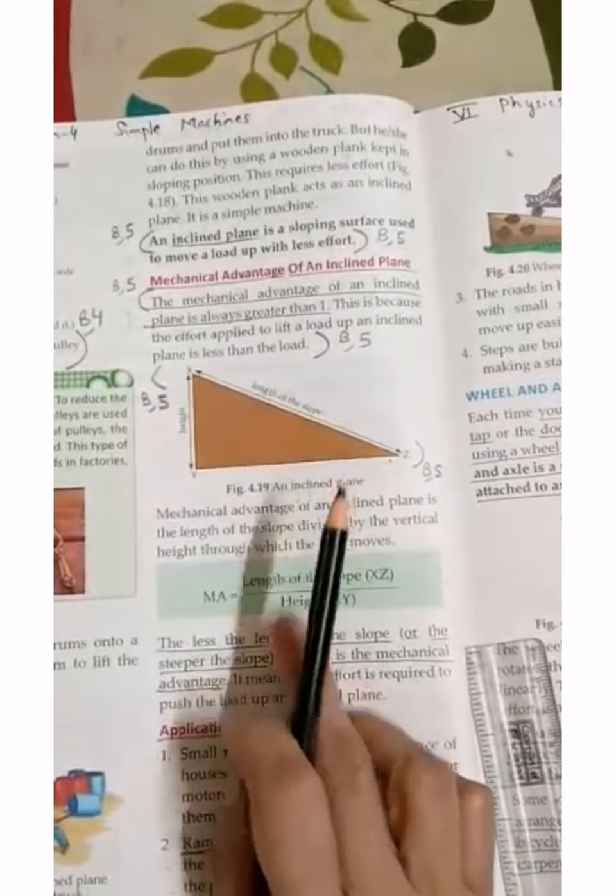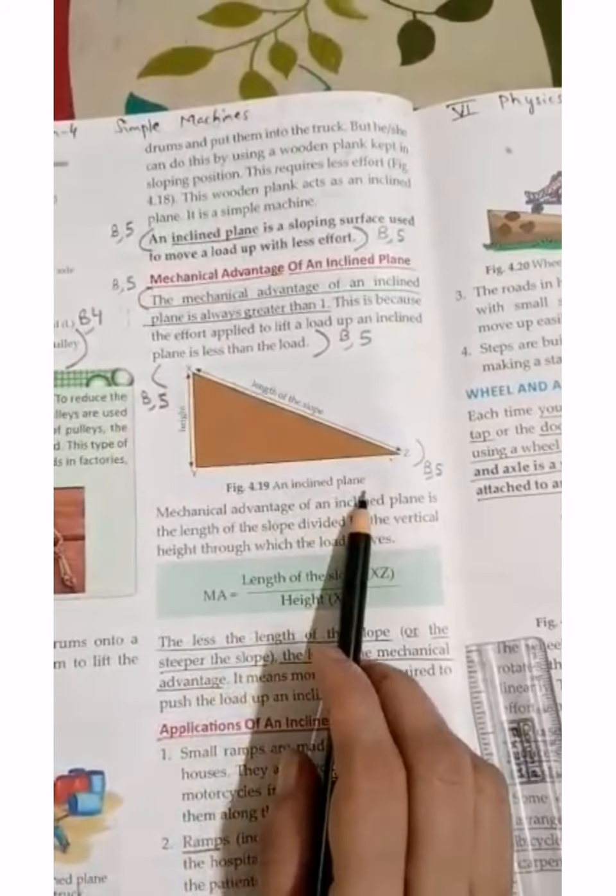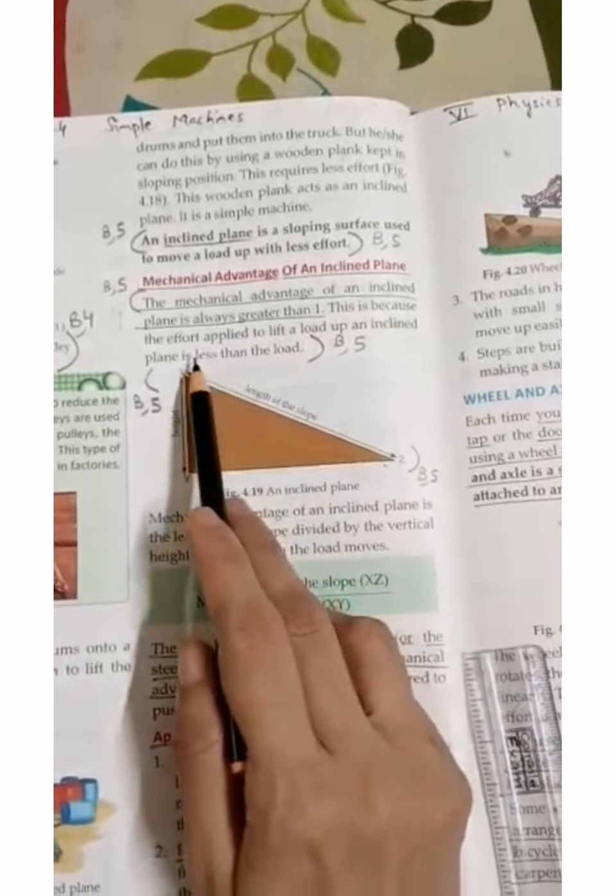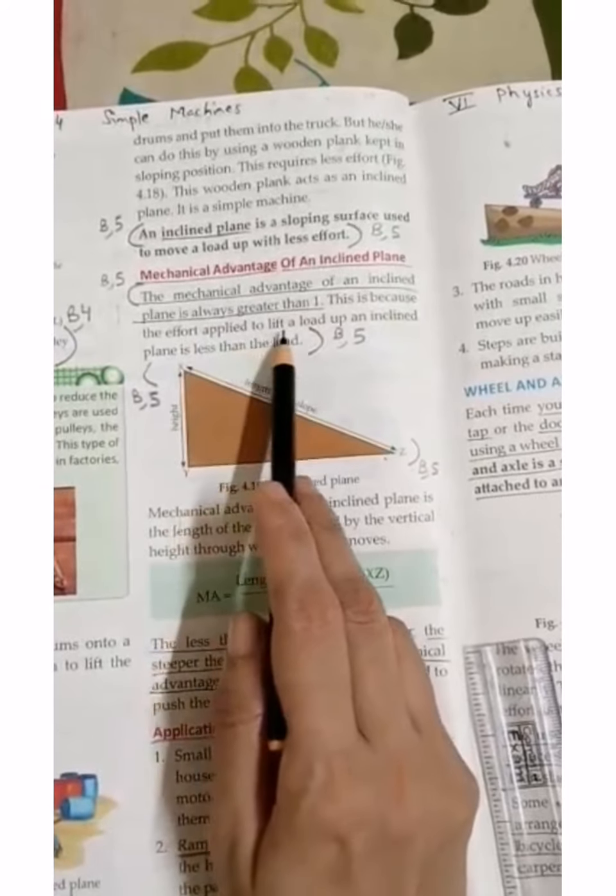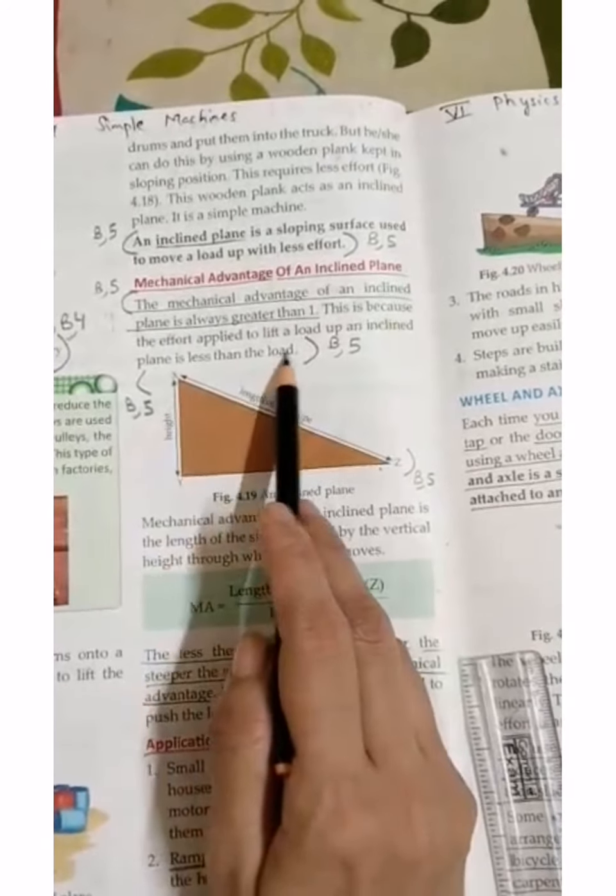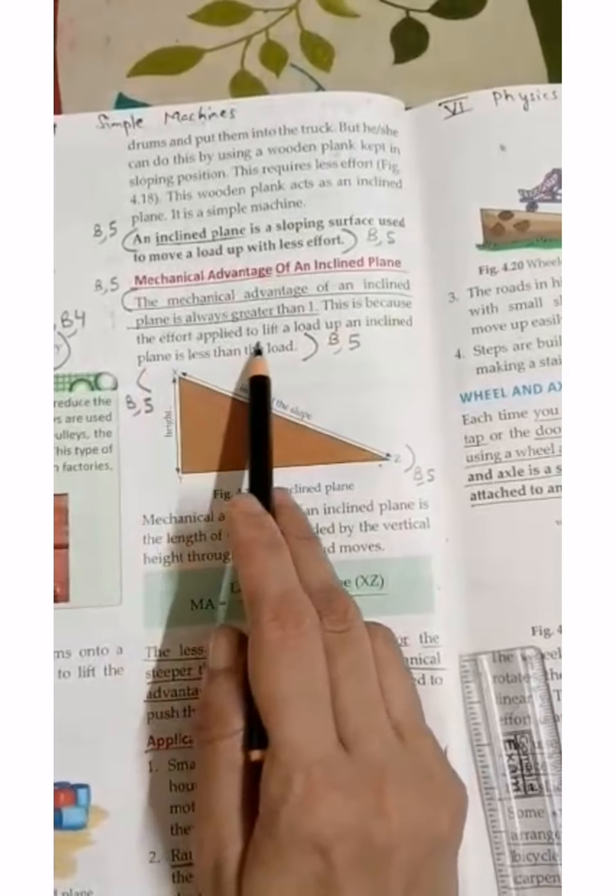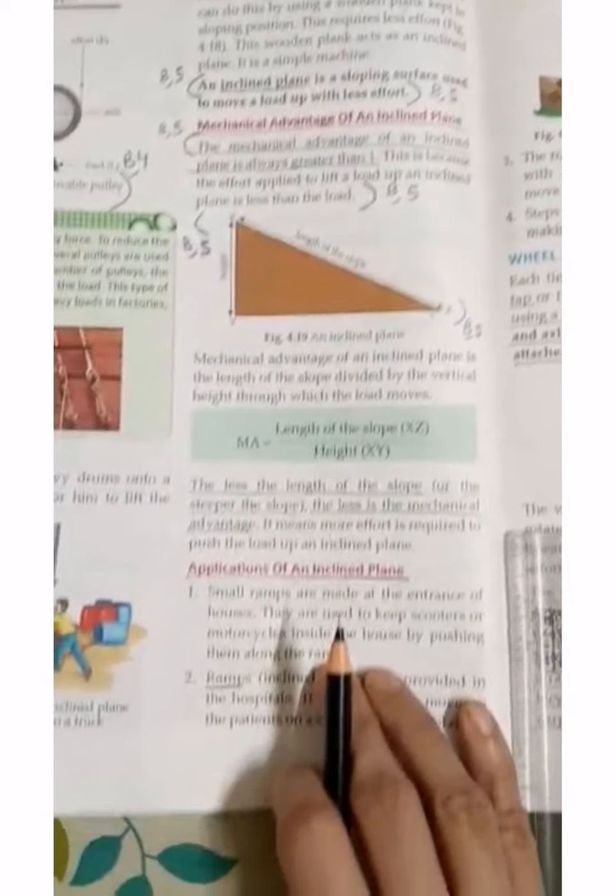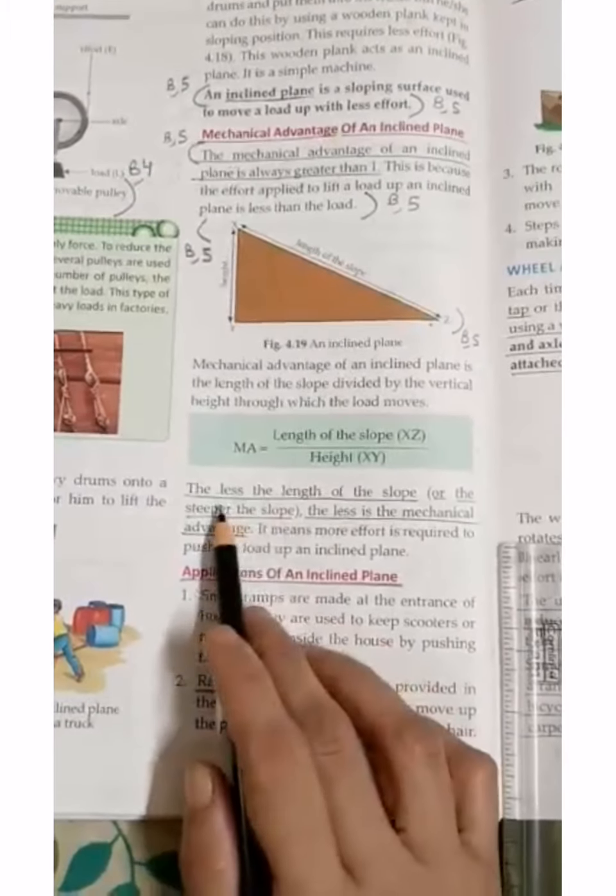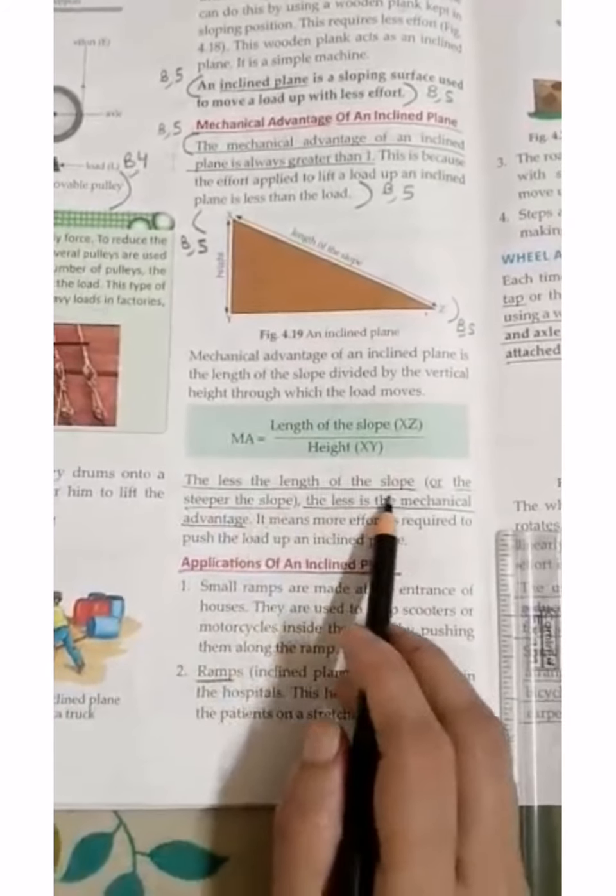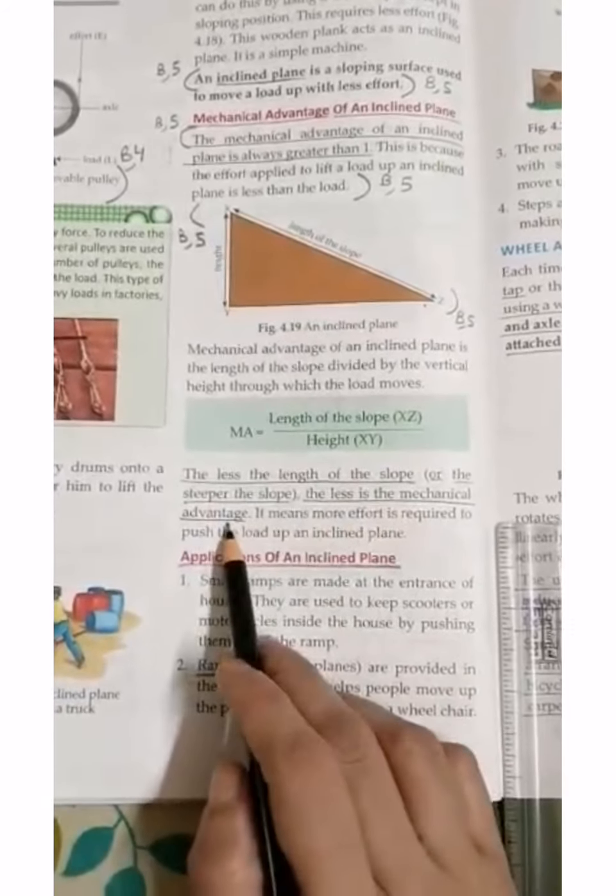It is always less than the load, because the effort applied to lift a load is less as compared to the load. What is the mechanical advantage here? Length of slope upon height. The less the length of the slope, the less is the mechanical advantage.